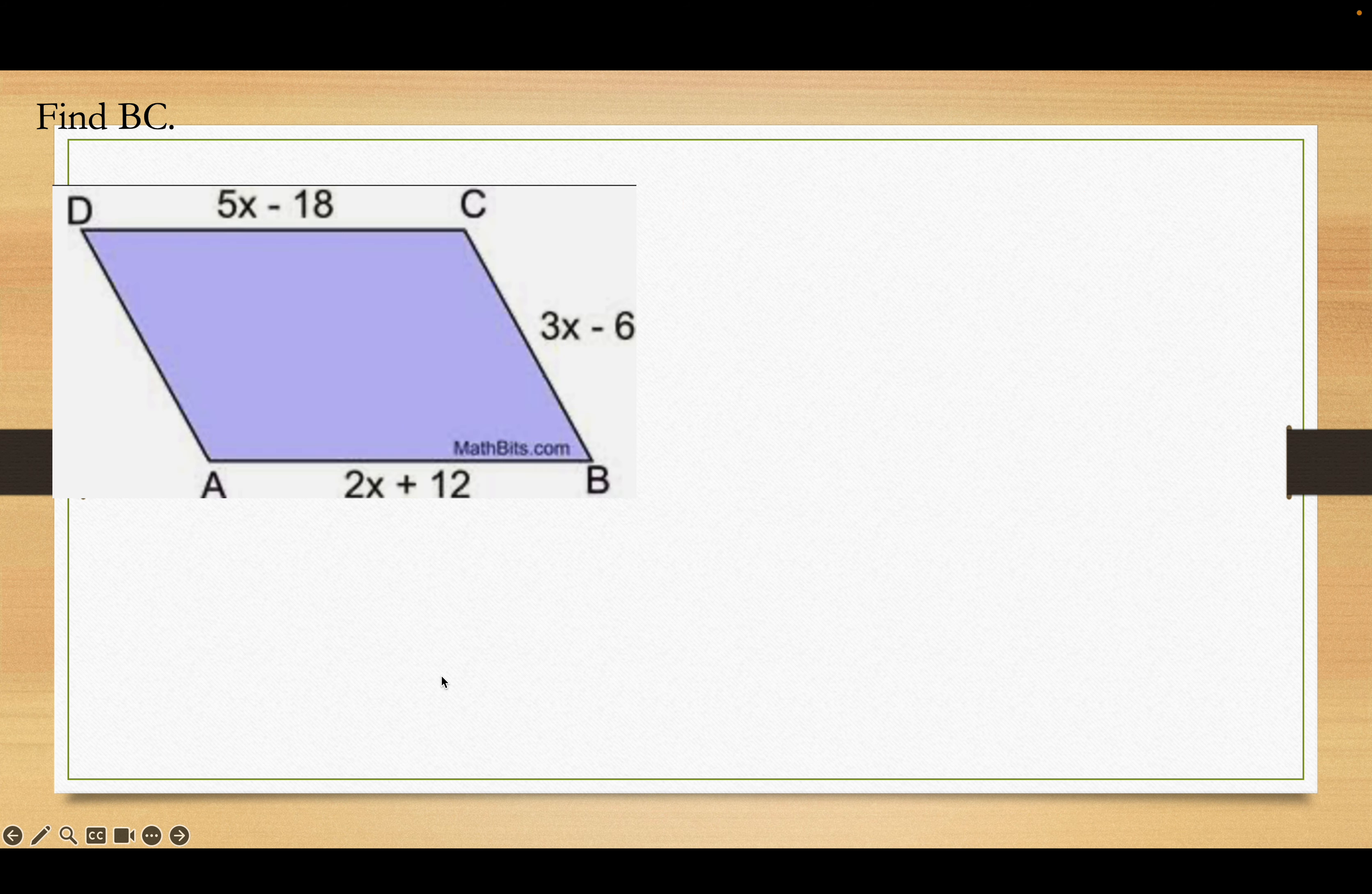Of course, you're on stop and start. Okay, so, the opposite sides are equal. 3X minus 6 is not opposite, or its opposite doesn't have any measurements, so we can't use that one. But, I can use the 5X minus 18 and the 2X plus 2. They're equal. X is on one side, numbers on the other. 3X is 30. X works out to be 10. Okay?